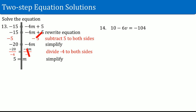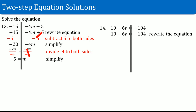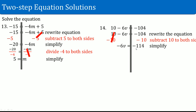Number fourteen: 10 minus 6v equals negative 104. Rewrite the equation and draw the line straight down. What is attached to v: a negative 6 times v as well as a plus 10. Deal with the plus 10 first — subtract 10. Do that to both sides. 10 subtract 10 on the left-hand side cancels out, leaving negative 6v. On the right-hand side, negative 104 minus 10 becomes negative 114. Divide by negative 6 on both sides. Negative 6 divided by negative 6 cancels out, leaving v. Negative 114 divided by negative 6 is positive 19.